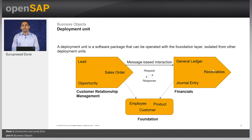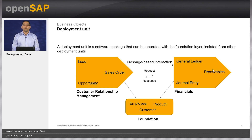As shown in the illustration, CRM and the financials deployment units access data from the foundation layer. However, the vice versa is not possible — that is, business objects which are part of the foundation deployment unit cannot access objects in other deployment units. Only a query can be used to read data of a business object residing in a different deployment unit. You cannot directly change data of a business object residing in a different deployment unit, but you can read the data through a query, a retrieve, or using an association. To change data between business objects lying in two different deployment units, we can use internal communication, which is an asynchronous message-based communication between the two different deployment units.